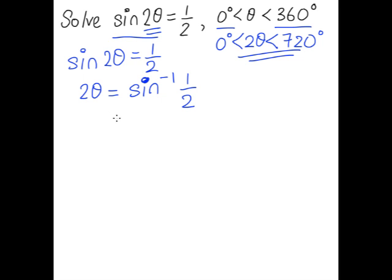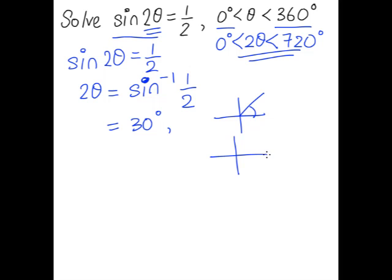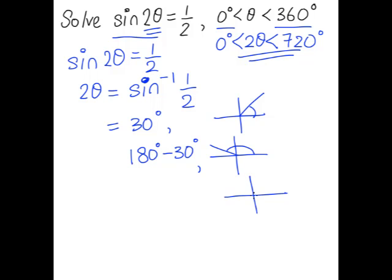To solve for 2θ, we take sine inverse of one half, which gives us 30 degrees. This is our first quadrant solution. Since sine is positive in both the first and second quadrants, the second quadrant solution is 180 degrees minus 30 degrees, which gives 150 degrees.